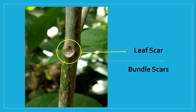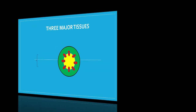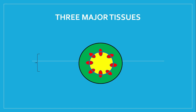A close examination of the leaf scar will reveal the bundle scars. The bundle scars originate from the vascular bundles — xylem and phloem tissues — that were cut off after the leaf falls. Internally, the stem has three major tissues with their corresponding functions. Number one is what we call the dermal tissue, which has the epidermis covered with a waxy material called cutin, for protection against mechanical injury and excessive water loss.